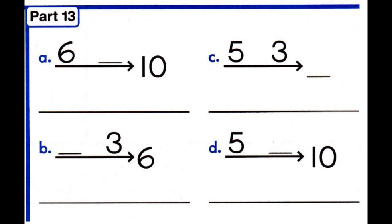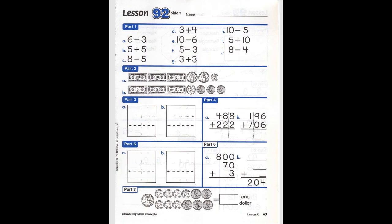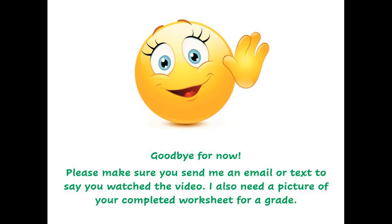Part 13, here is where you have a missing little number, a big number. You need to write the equation you use to find your missing number and then write the number on the blank on top of the number family. So that is the rest of your worksheet. Now it's time for you to go and do your worksheet. Make sure when you're completely done that you have someone take a picture of it and send it to me.